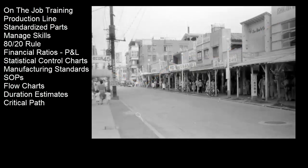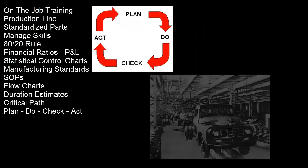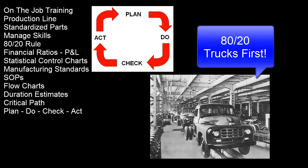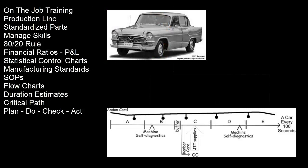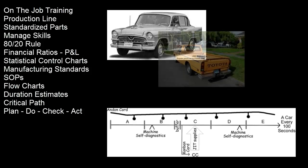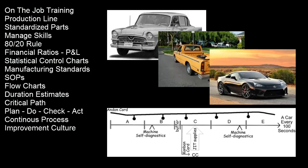In the 1950s, Deming had been invited to Japan to help Japanese industry recover from war damage. He introduced his simplified methods, including the Deming cycle: Plan, Do, Check, and Act. He preached to the Japanese industrialists to keep it simple. Toyota became the best example of using simple methods and continuous process improvement to achieve high quality, the ability to produce to actual demand in the marketplace, and a continuous process improvement culture that continues today to simplify their manufacturing processes.